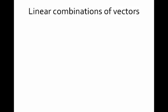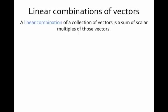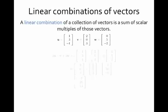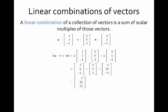Now that we've talked about scalar multiples of vectors and how to add vectors, we can introduce the very important notion of a linear combination of a bunch of vectors. A linear combination of a collection of vectors is a sum of scalar multiples of those vectors. For example, suppose I have three vectors u, v, and w.